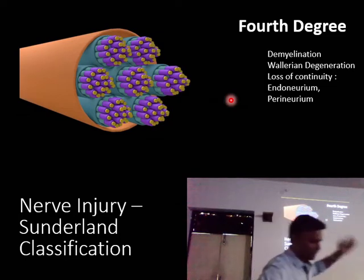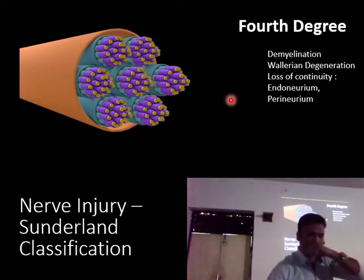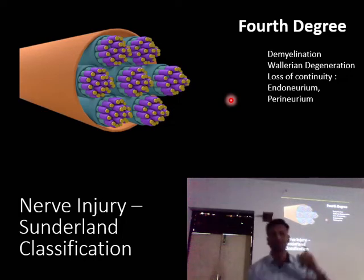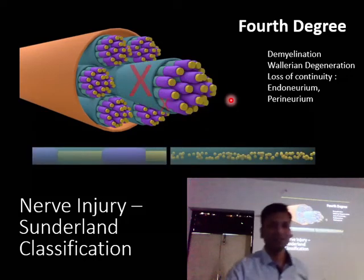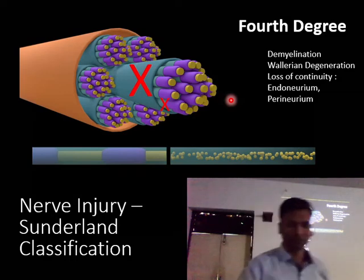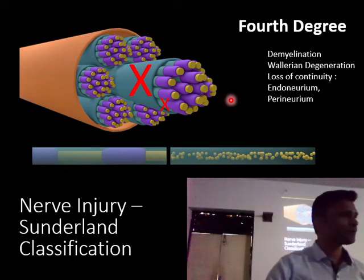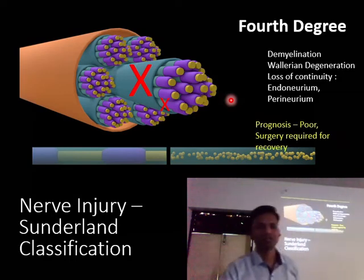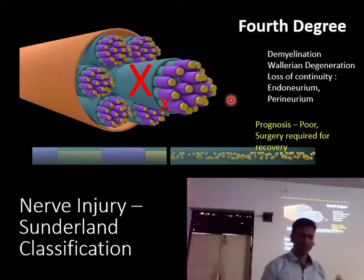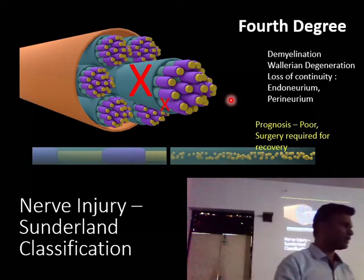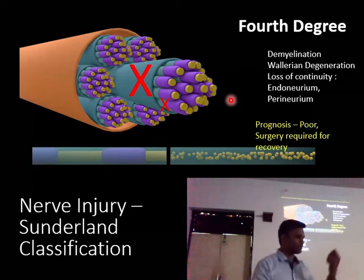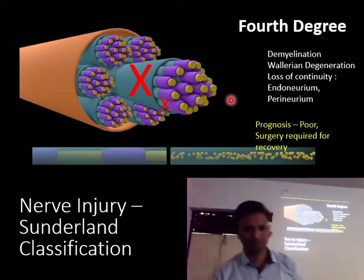In Sunderland's fourth degree, we go one level up: demyelination, Wallerian degeneration, loss of continuity of the endoneurium, and also loss of continuity of the perineurium. The prognosis is very poor and surgery is definitely required — we need to re-suture the perineurium to achieve an acceptably good recovery.